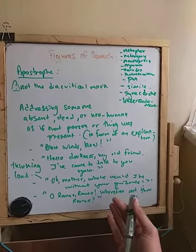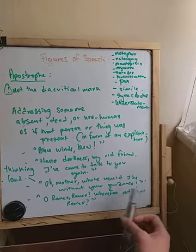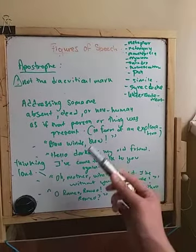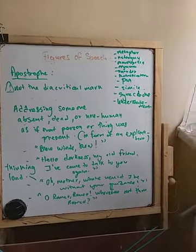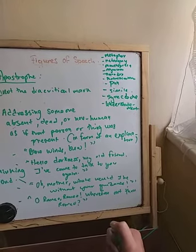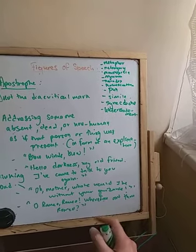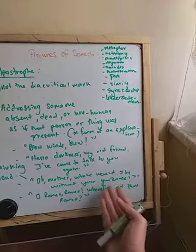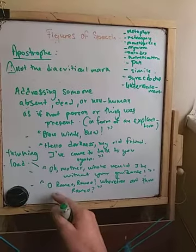You're having a conversation with yourself, so it's a monologue. I'm focusing a bit on monologue, dialogue, and conversation because I really enjoy what I'm doing. Your mother is not here, and you are addressing yourself to her knowing she won't answer — that's another clear example of an apostrophe.